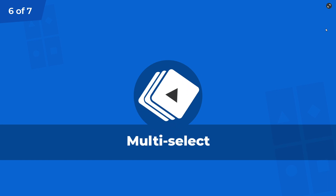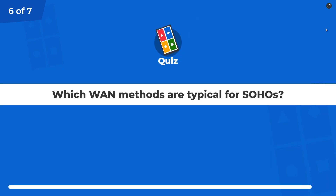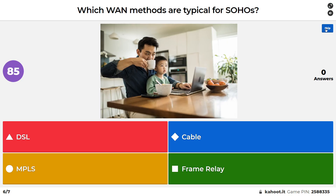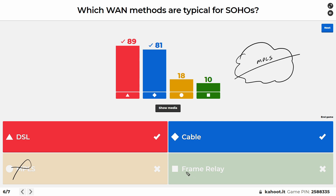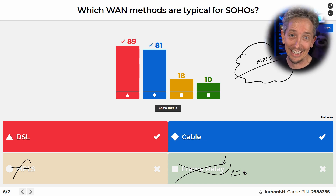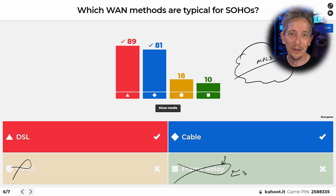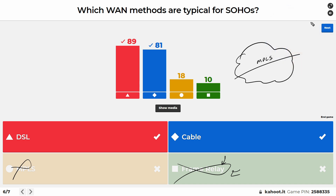Question six of seven, multiple select: Which WAN methods are typical for small office/home offices? DSL and cable are the two main methods from this list. MPLS is a great option but it's typically for companies with the budget to pay for it as a managed service. Frame relay is very rarely seen anymore — it's a legacy corporate technology from when companies were moving away from leased lines. So DSL (Digital Subscriber Line) and cable are the answers here.